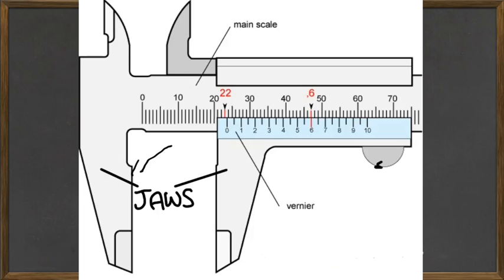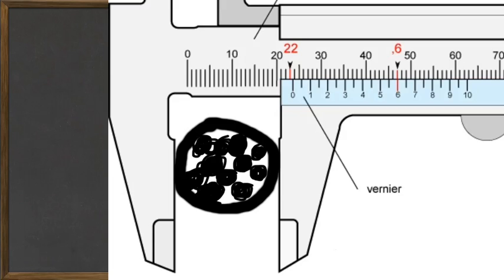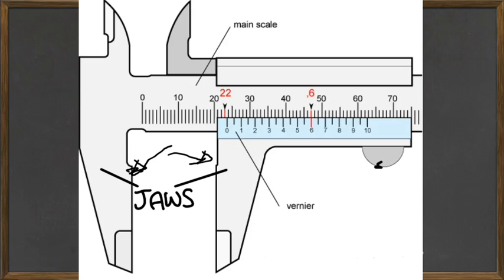So what you do is you put a thing behind them, for example a football, and you tighten the jaws and you measure the distance. Now that we've cleared up what actually... before I get into how we read a vernier caliper, I would just like to point out something that is very important.